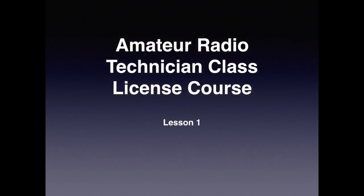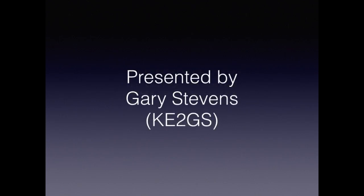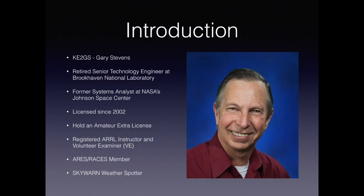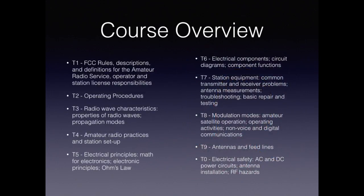Let's get started with the amateur radio technology class license course for the FCC exam. I'll begin by introducing myself. My name is Gary Stevens, I'm KE2GS. I'm a retired senior technology engineer at Brookhaven National Laboratory and was formerly a system analyst at NASA's Johnson Space Center. I've been licensed since 2002 and I hold an amateur extra license.